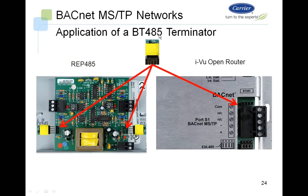Here you can see the application of the BT45. Looking at the RAT45 repeater or an iView Open router, the connections right next to the port on the router show where the BT45 goes. On the repeater, there is one BT45 on each side, because the repeater is the last device on one physical segment and the first device on the next physical segment.